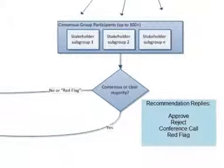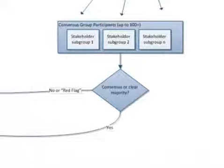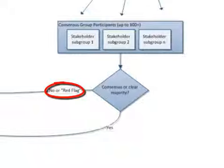The first is approve. The second is reject, which means you oppose the recommendation but can live with the decision if the majority supports it. The third is conference call, which means you need additional information before you can even cast a vote. These conference calls will be arranged very quickly to keep the process on track. And finally, a red flag, which means even if everybody else votes for it, you can't support the recommendation either because it creates a critical patient safety issue, violates an organizational value, or has some other very important fundamental problem.